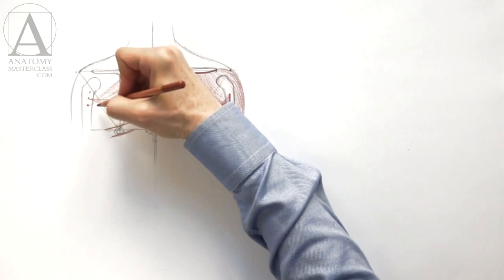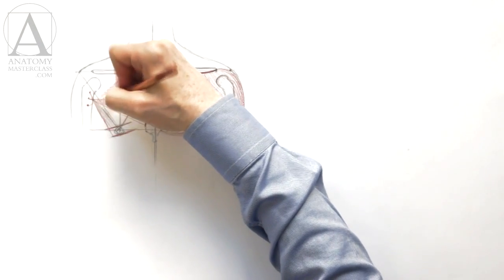And finally, the lower portion of the breast muscle goes from the ribs to the top point of insertion.